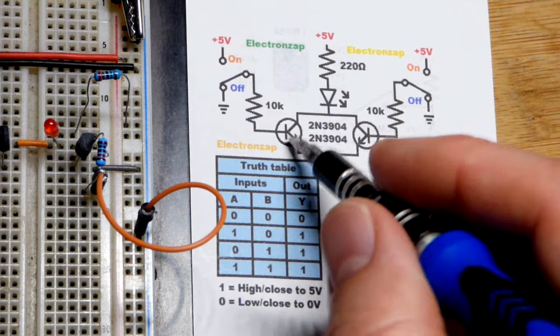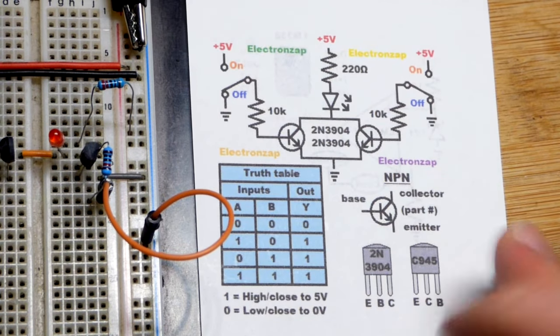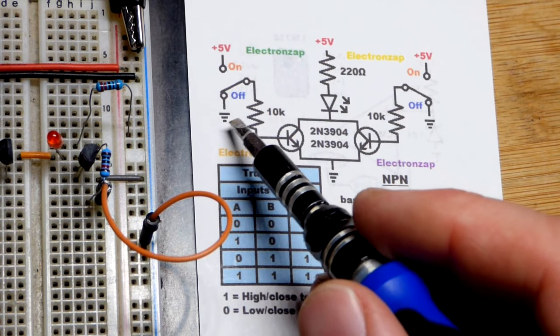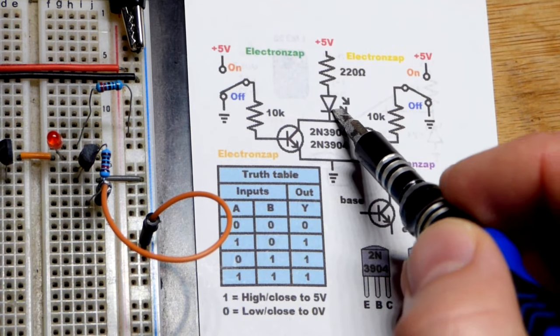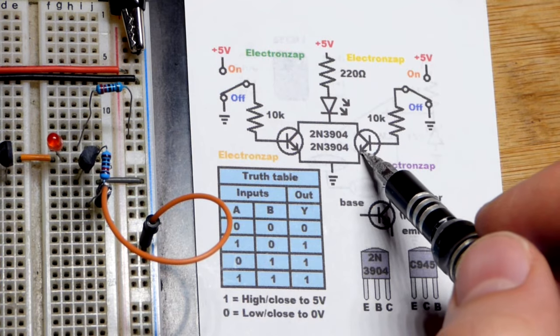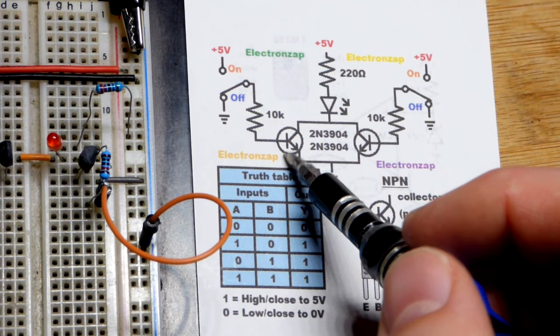But, yeah, here we got two transistors. So, maybe you got a couple of different ways you want to be able to turn, in this case, an LED on, but power or load. Maybe they're weak signals, and the transistor is boosting it.